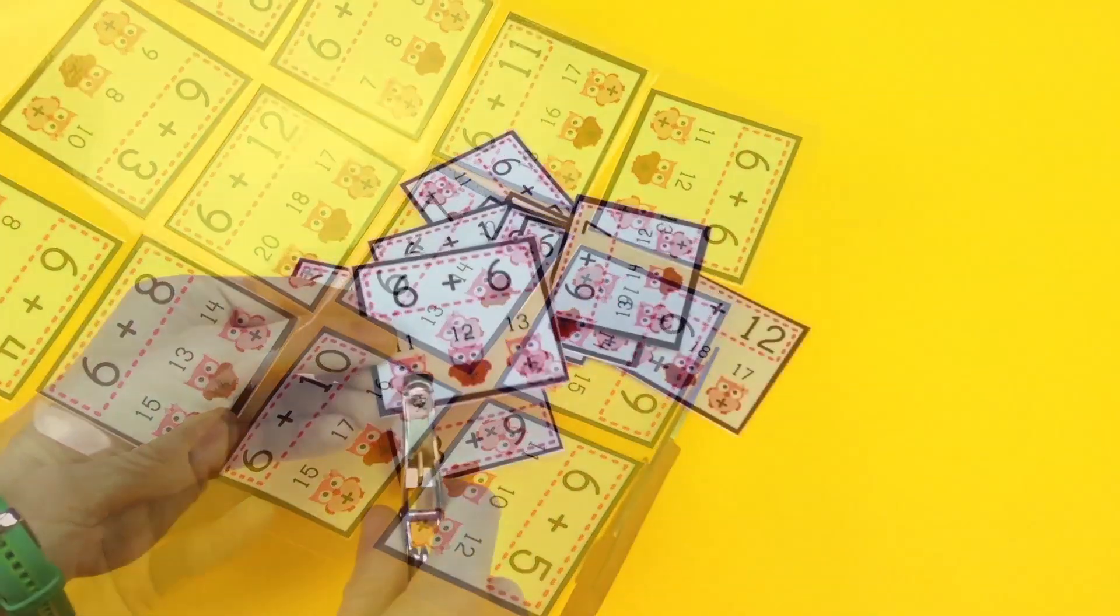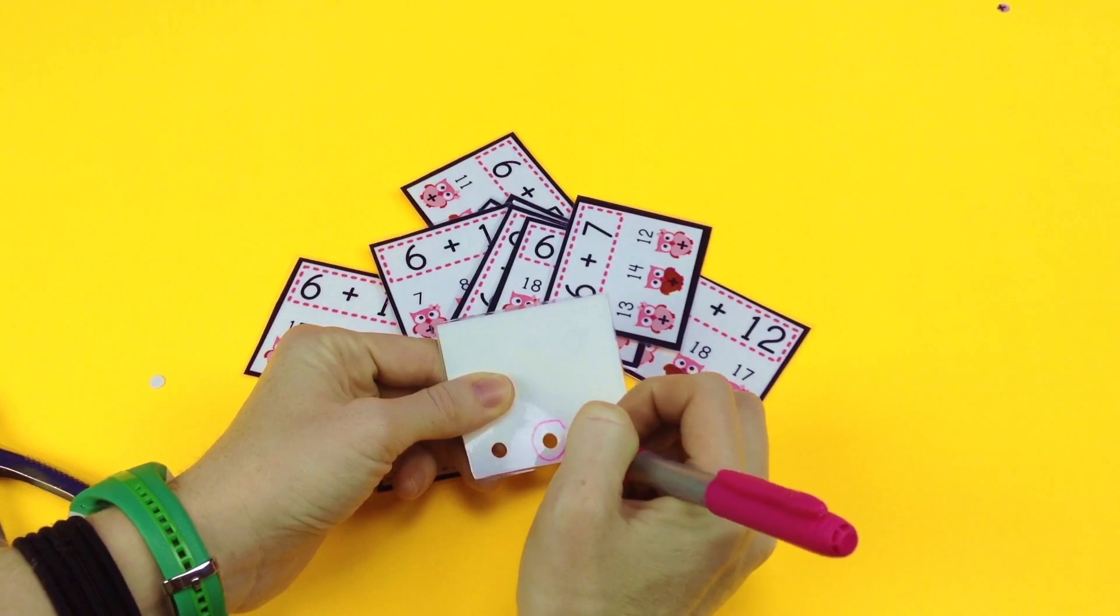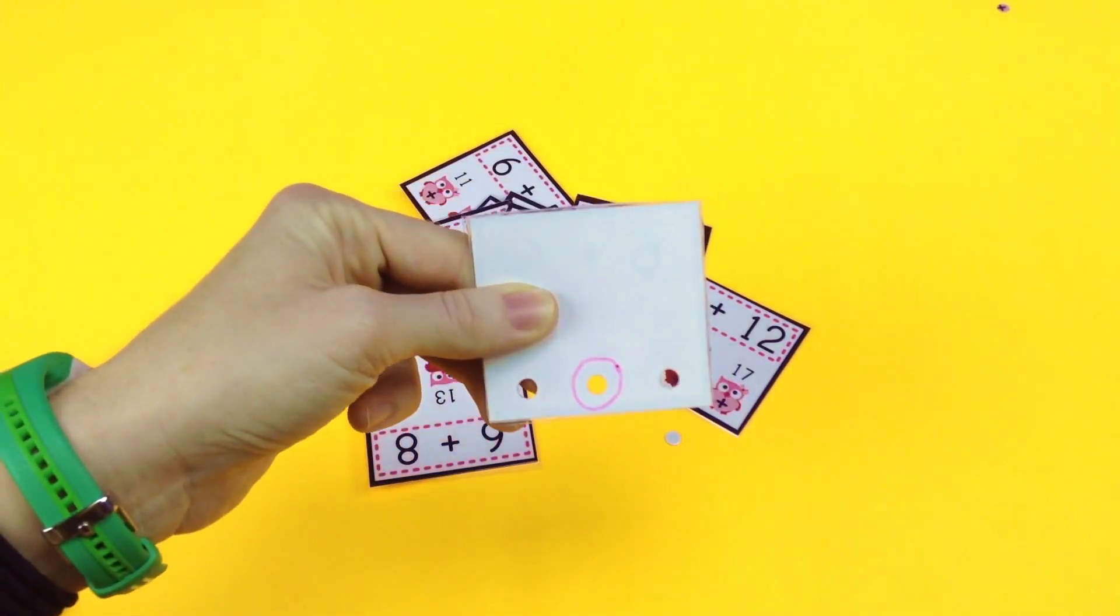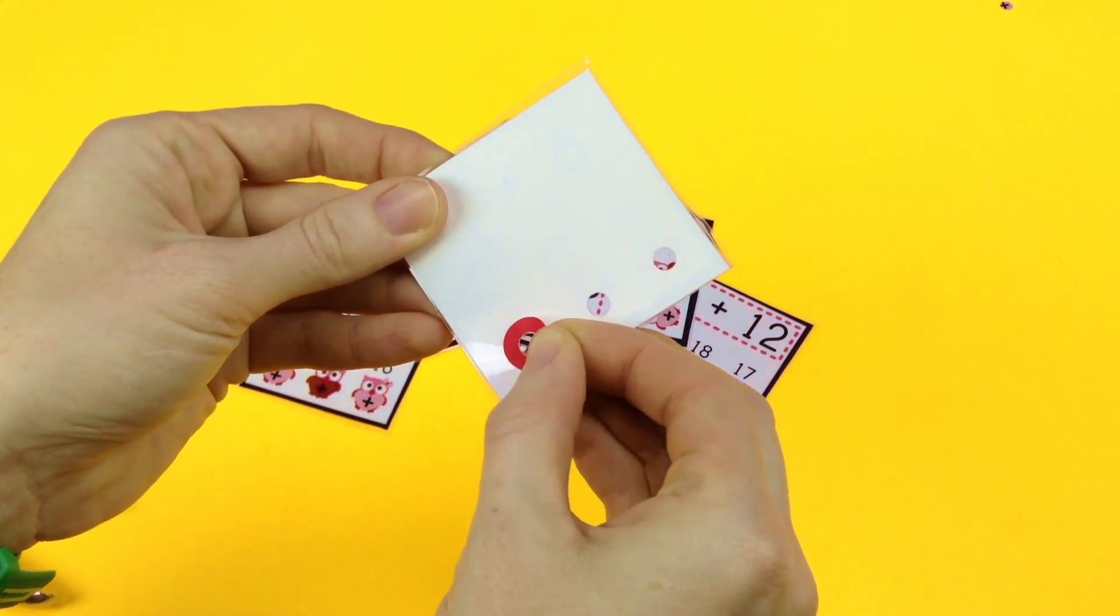Then you hole punch on the plus signs and then on the back you circle the correct answer, or some people have placed those hole protector stickers on them also. Whatever way works for you.